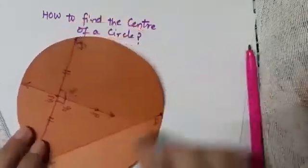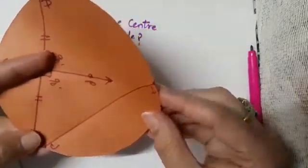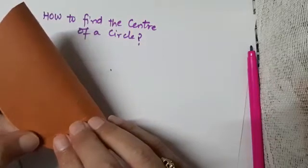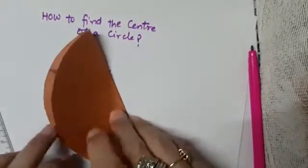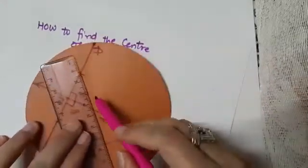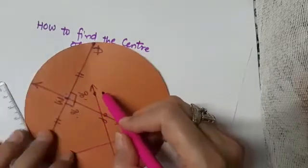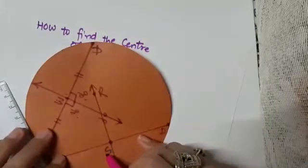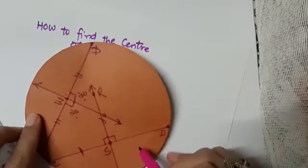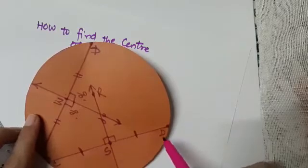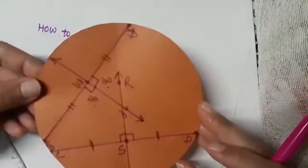Similarly, we get the perpendicular bisector of the second chord CD. We fold along CD such that point D falls on C completely, make a crease, and unfold. On the crease, we mark the perpendicular bisector and name it RS, so RS is perpendicular to CD and CS equals SD. RS is the perpendicular bisector of the second chord CD.